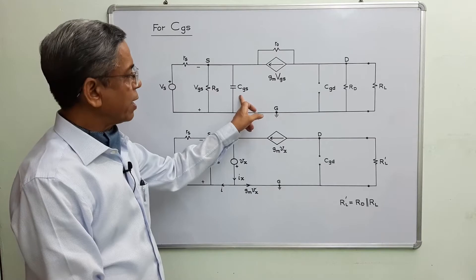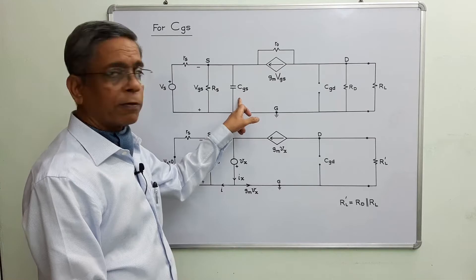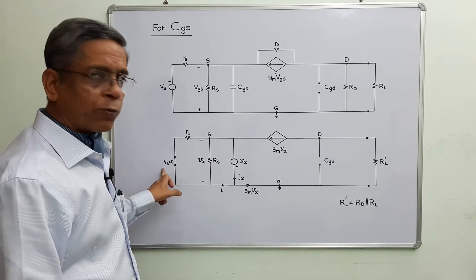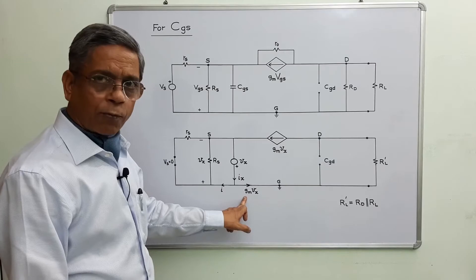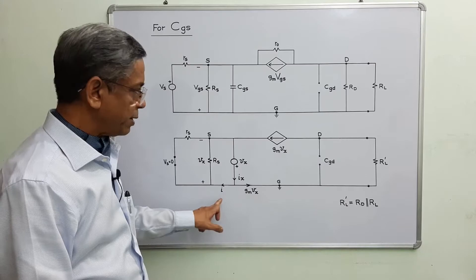As per Step 1, I select CGS and consider CGD as open circuit. I find the Thevenin equivalent resistance across the terminals of CGS. Following Thevenin's theorem, I replace CGS with a test voltage and short circuit the input voltage source to zero. The voltage controlled current source produces GM·VX in the indicated direction, and the test current IX equals the sum of two current components.